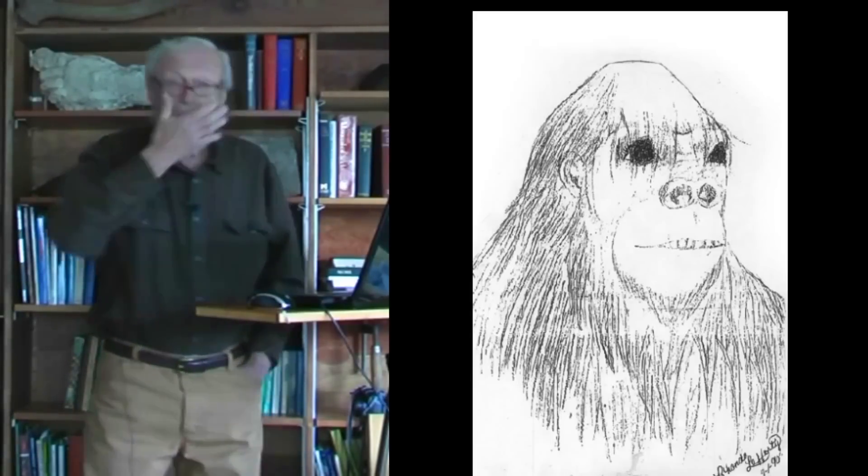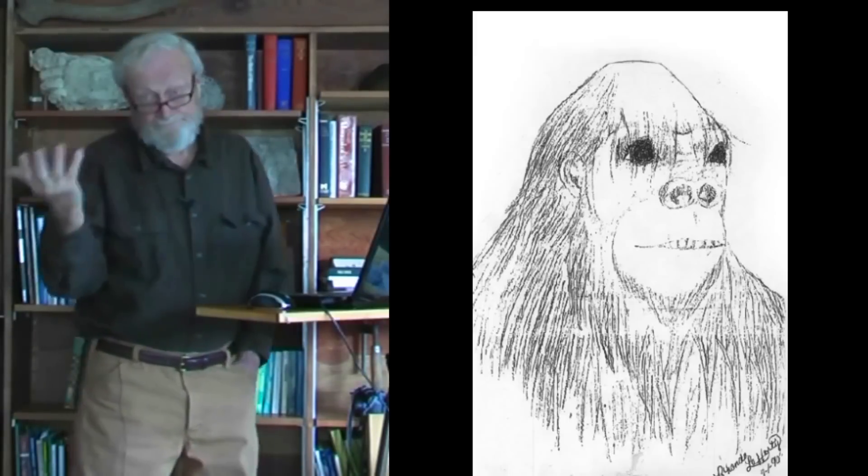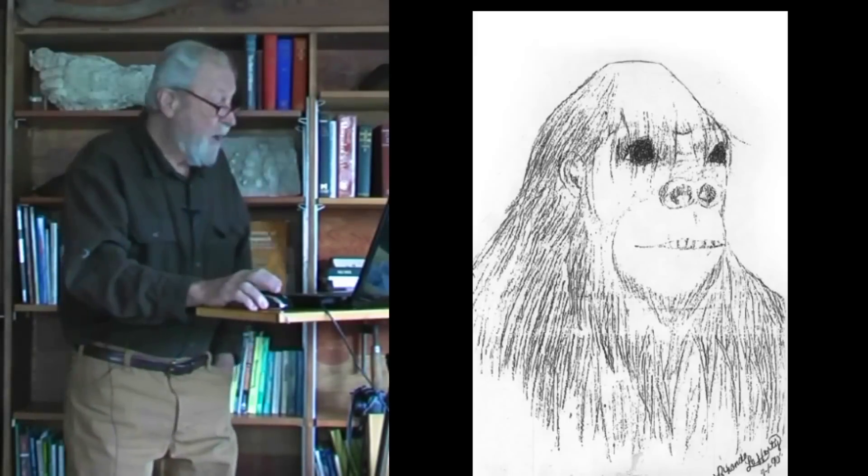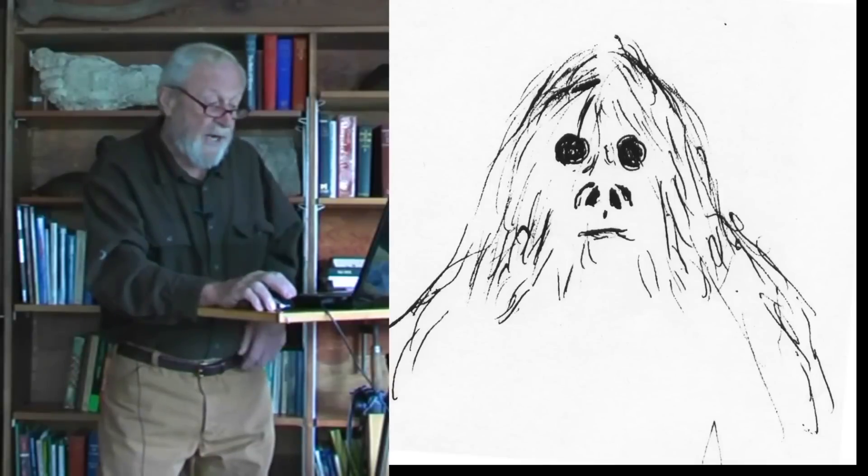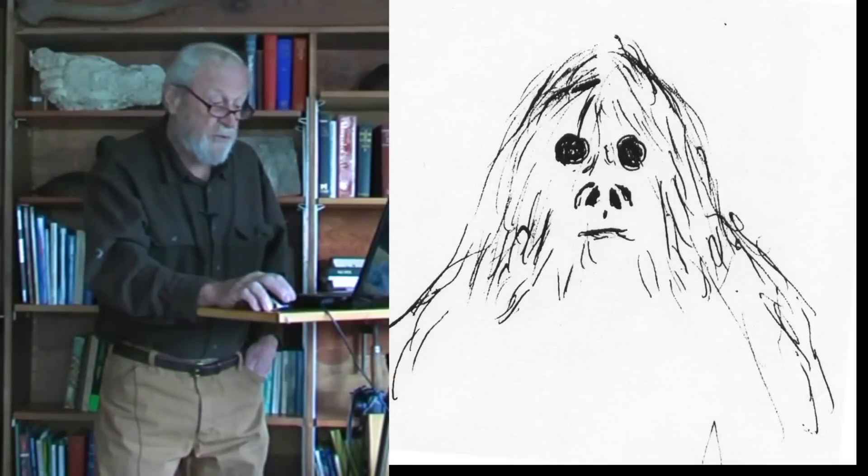Although it doesn't show up real well, a rounded chin, not the sharp pointed head of the human, but the rounded chin of some of the great apes. And one last one from Vancouver Island, just a sketch, in this case looking at us, showing those forward-facing nostrils again.